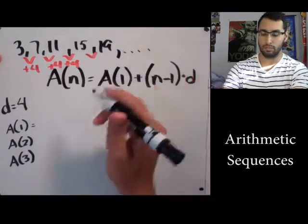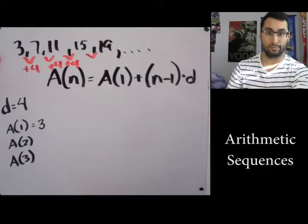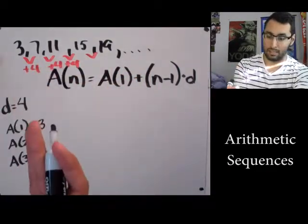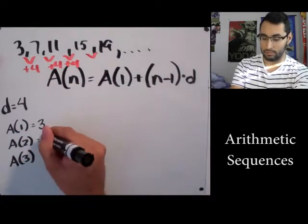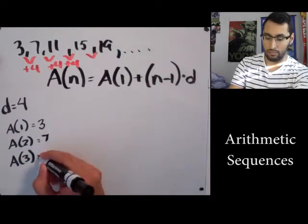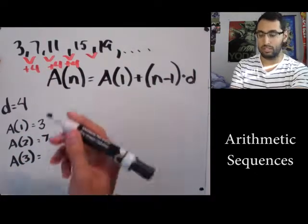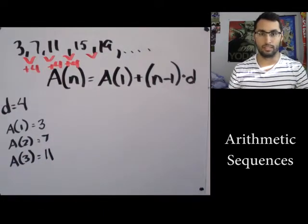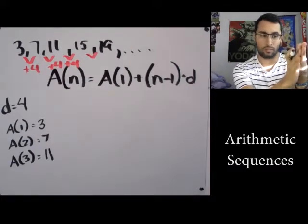So A(1), if I look at my sequence, my first term is 3. What's the second term? Well if I look at my sequence, what's the second number in it? It's 7. A(3), well it's the third, so that's 11.